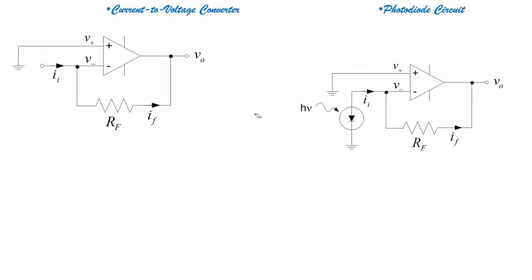Now, if I want to show you a problem involving a current-to-voltage converter — if you come to the screen, there is a current-to-voltage converter. In the first circuit shown here, IF equals I1.